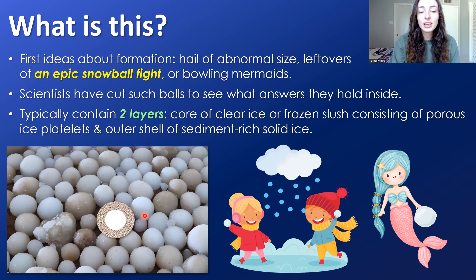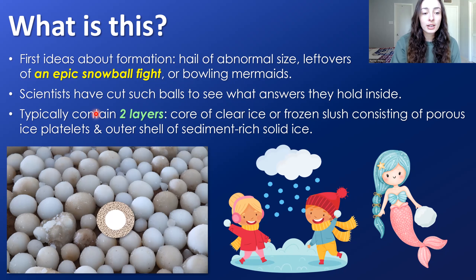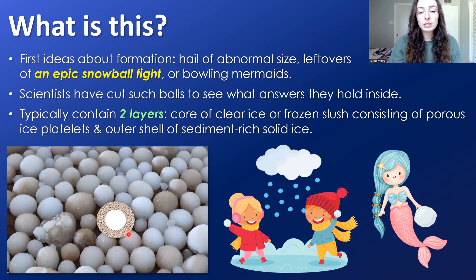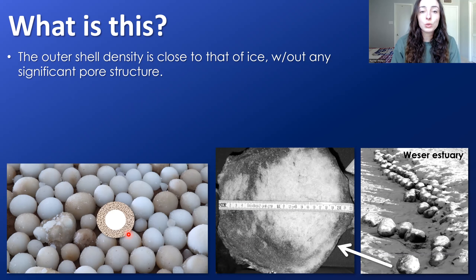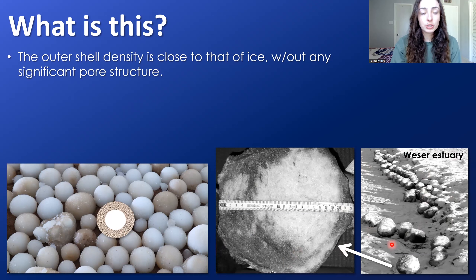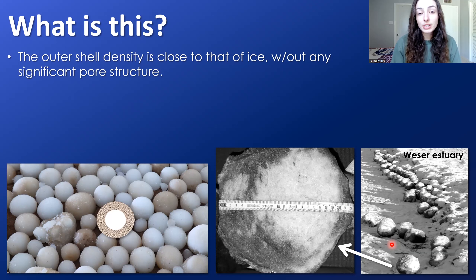Typically, these ice balls contain two main layers: a core of clear ice or frozen slush that has relatively porous ice platelets in some cases, and an outer shell of sediment-rich solid ice — so kind of dirtier ice. The outer shell density is closer to that of ice without any significant pore space, unlike the core in some of the balls tested. The ice balls tested are from the Weser estuary in Germany.